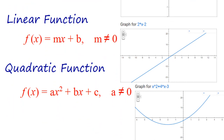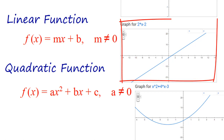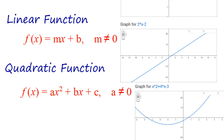Then we have a linear function, which is of course our y equals mx plus b, or f of x equals mx plus b. This is a graph of y equals 2x minus 2. You can see the y-intercept of negative 2 and the slope of positive 2. But we're going to be studying quadratic functions.